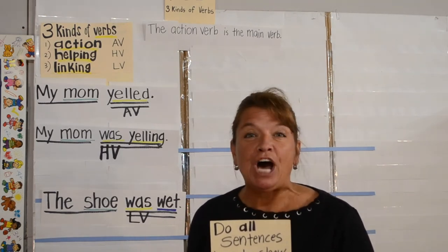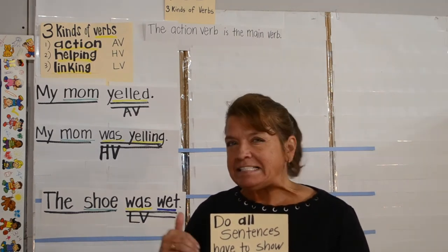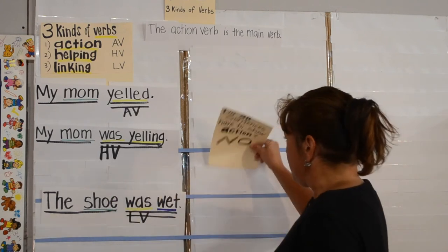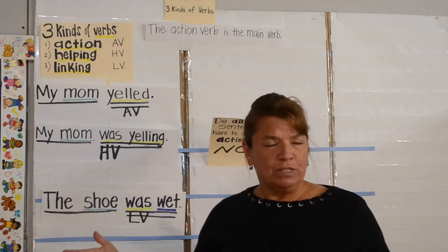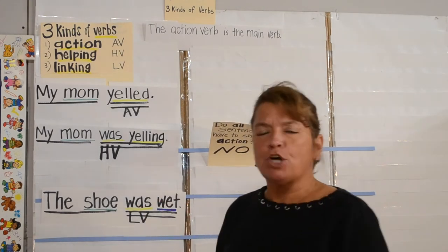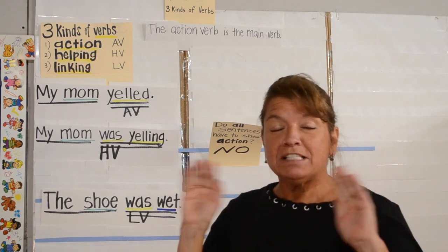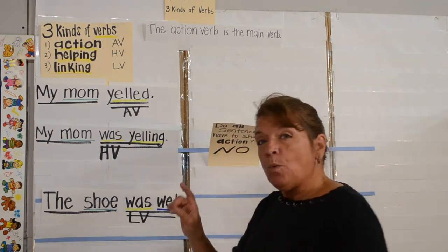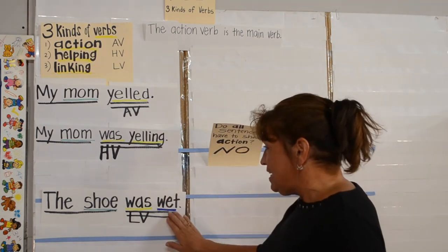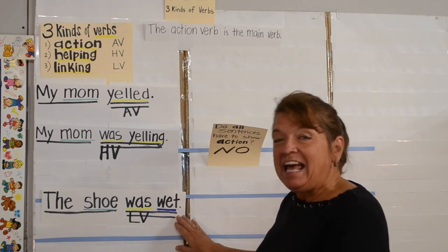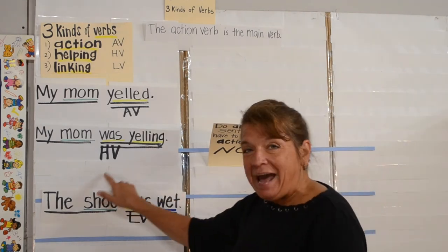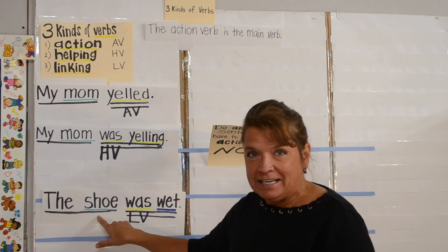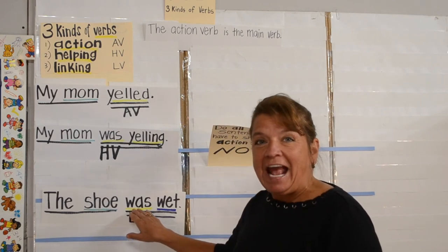But in all reality, all sentences do not have to show action. When you have a sentence that does not show action, it is a linking verb. So I ask the children: the shoe was wet — does that sentence show action? No, it doesn't. Oh, Mrs. Miller, we have a linking verb! Bingo. What is happening here is the adjective wet in the predicate is linking back to the noun shoe in the subject. So was is considered a linking verb.